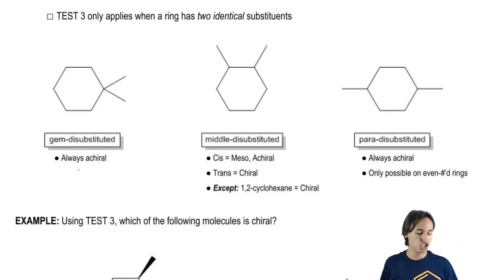There's what I call gem disubstituted. Gem is short for the word geminal. And later on, what we're going to learn about the word geminal is that it means two things coming off of the same carbon.